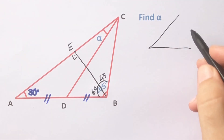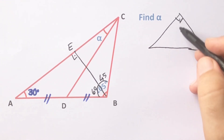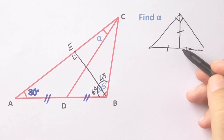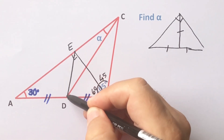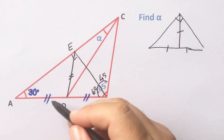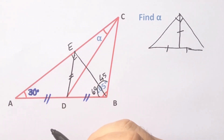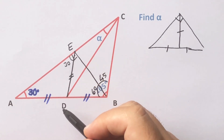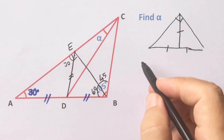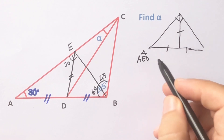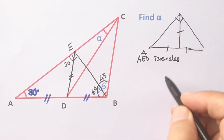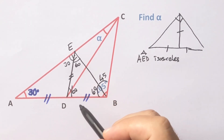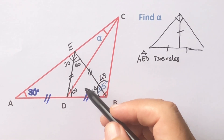Let me remind you: if you have a right triangle and you draw a median, these parts must be equal to each other. So if we connect here, and if it is 30 degrees, this angle is also 30 degrees, because the AED triangle is an isosceles triangle.